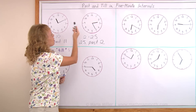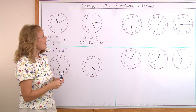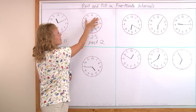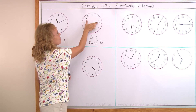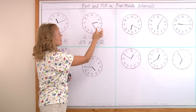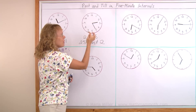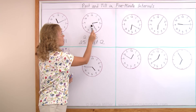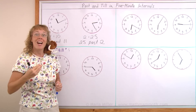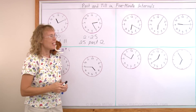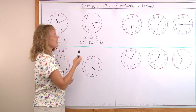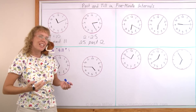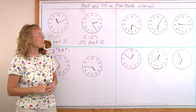We use past whenever the minute hand is in the first half — 5 past, 10 past, 15 past, 20 past, 25 past — up to when it is pointing straight down, which is half past. Half past is actually 30 minutes past the whole hour, but we say it as half past the whole hour.